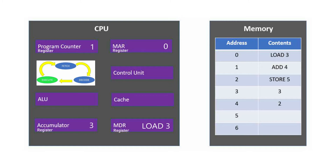The Fetch cycle begins again. The memory address register copies the new address from the program counter, which is 1. The control unit sends a signal to memory location 1, and the actual data is transferred to the memory data register. Cache is used to store a copy of this data. This is the end of the Fetch cycle, and so the program counter increases by 1.